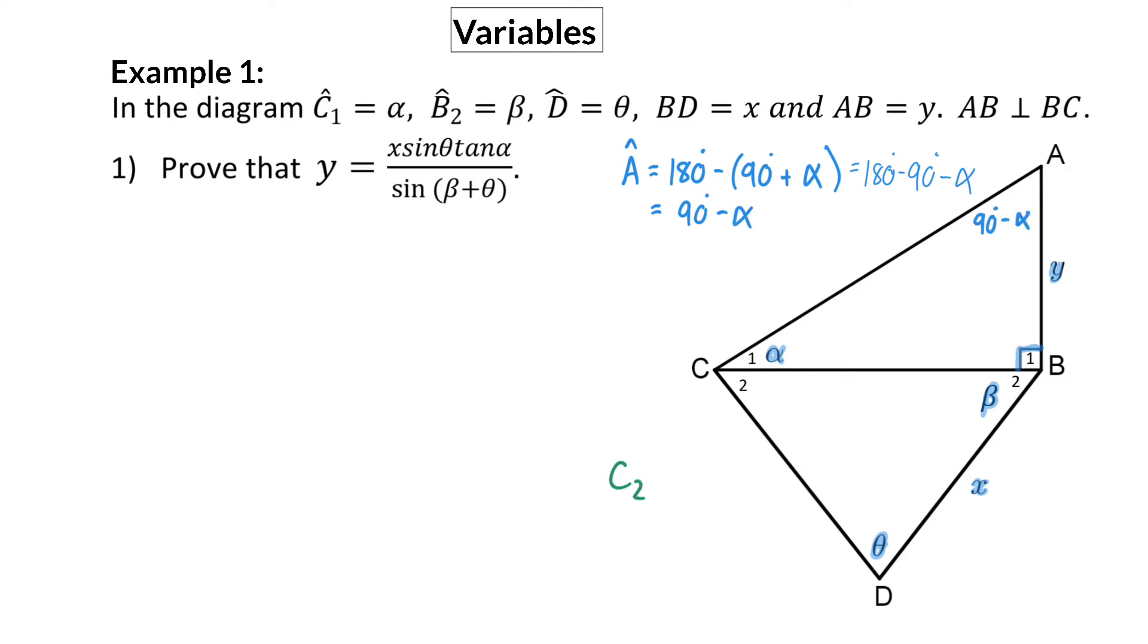Similarly, angle C2 can be calculated by subtracting from 180 the other two angles in triangle BCD, and that is beta and theta. Here, I would advise you to not multiply that minus in, but keep it just like that. The reason for that is that both these angles are variables and cannot be simplified any further. This will help you to identify reduction formulas later on.